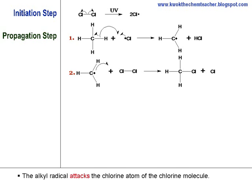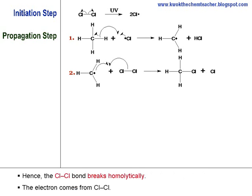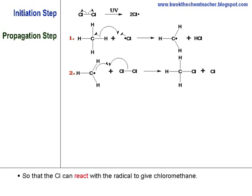In this case, the alkyl radical this time attacks the chlorine atom of the chlorine molecule. And we can see that the chlorine-chlorine bond would therefore break homolytically with the electron coming from the chlorine-chlorine bond. This transfer of electrons allow the chlorine to react with the radical to give our chloromethane molecule.